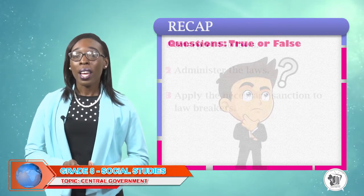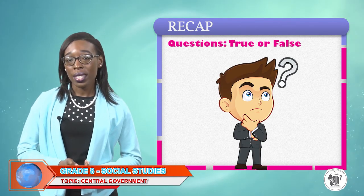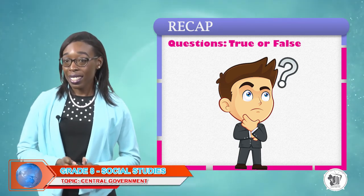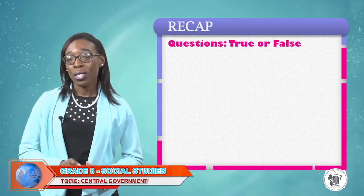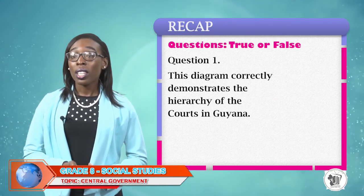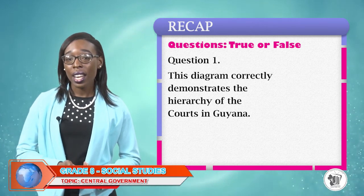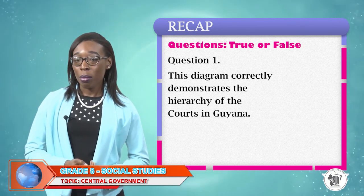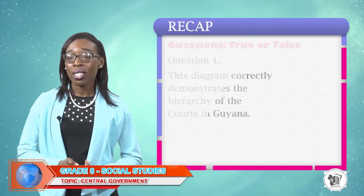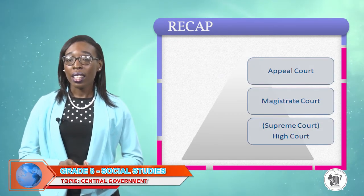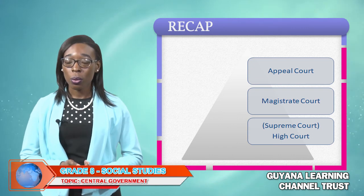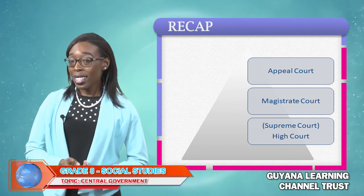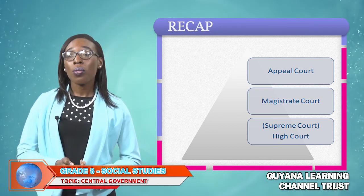Here are two true or false questions. I would like for you to pay keen attention, observe, and listen to the questions that are asked, and then respond. This diagram correctly demonstrates the hierarchy of courts in Guyana. Look at the diagram on your screen. At the base, we have the Supreme Court, also known as the High Court, the Magistrate Court, and then the Appeal Court. Is this diagram correct — true or false?